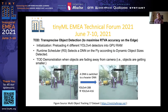We noticed that real-time video input data have dynamic features in terms of object size and object moving speed, and we can leverage such dynamic input features to improve accuracy. Therefore, our approach switches multiple deep neural networks dynamically according to such dynamic input features, in order to maximize the real-time object detection accuracy. We named this approach Transprecise Object Detection, TOT for short.